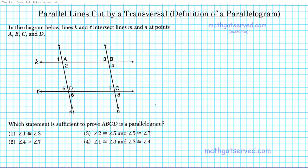Good day students, welcome to mathgotserved.com. In this clip we're going to be taking a look at an example on parallel lines cut by a transversal and the definition of a parallelogram. The question is: in the diagram below, lines K and L intersect lines M and P at points A, B, C, and D. Which statement is sufficient to prove that ABCD is a parallelogram? We have four options we are going to be looking at.